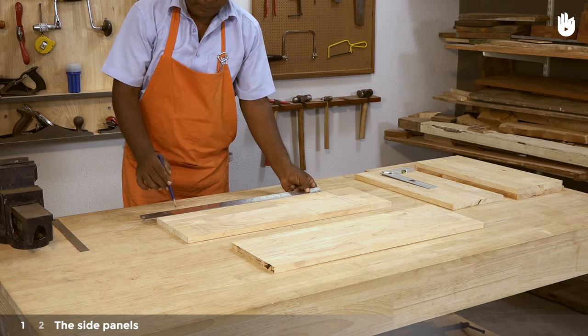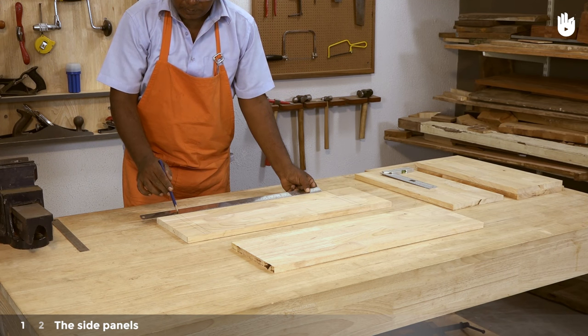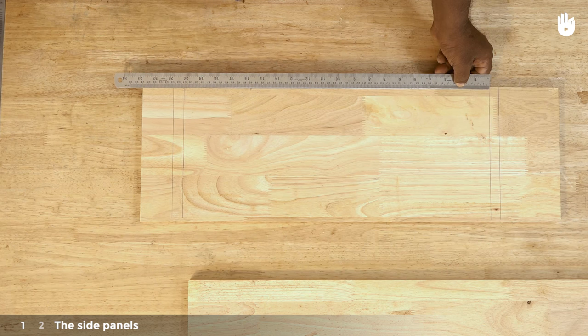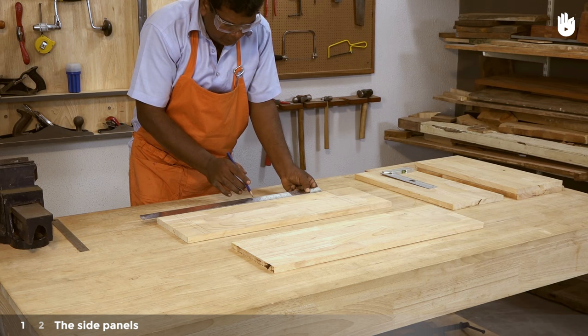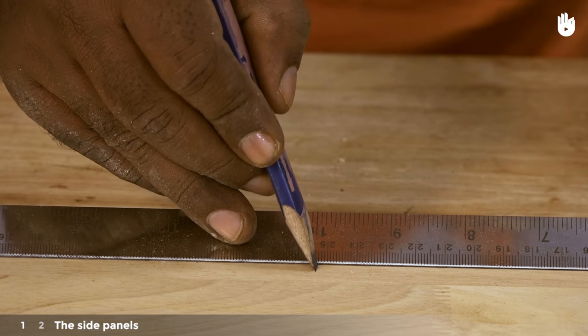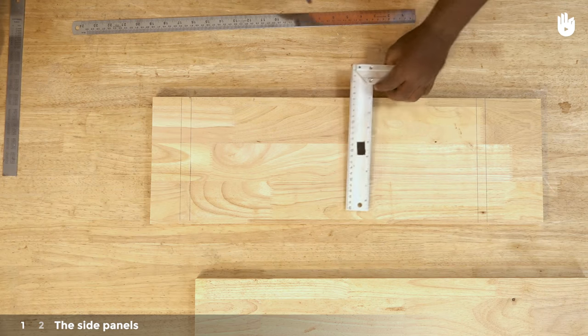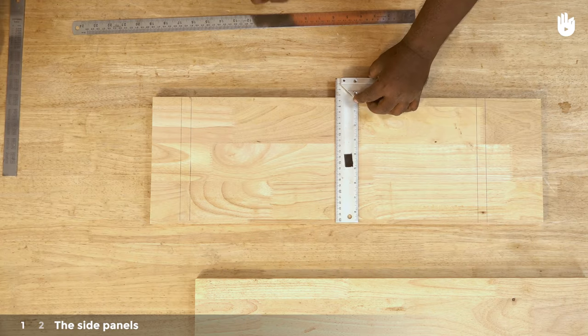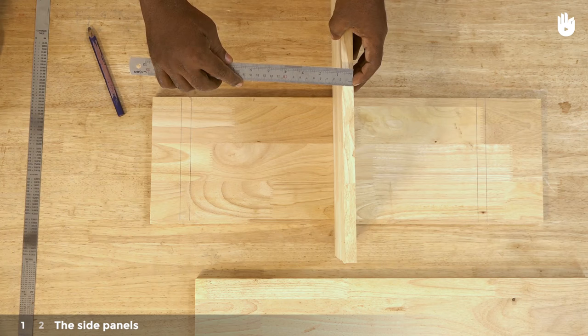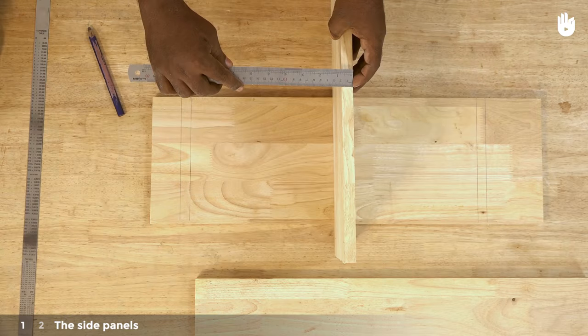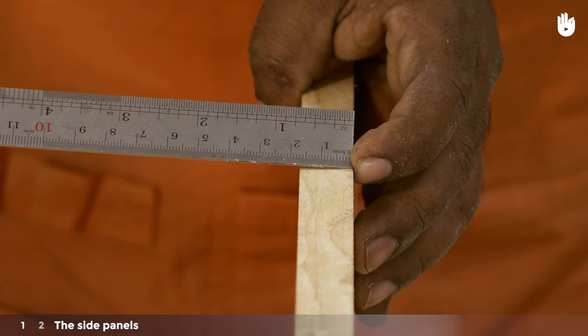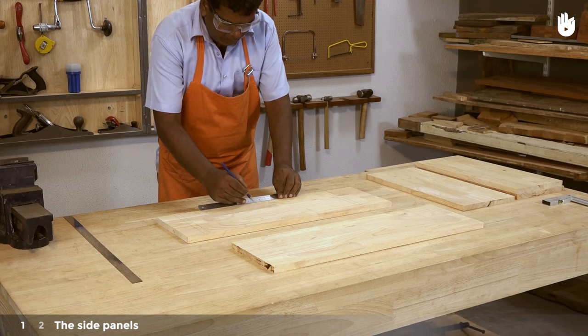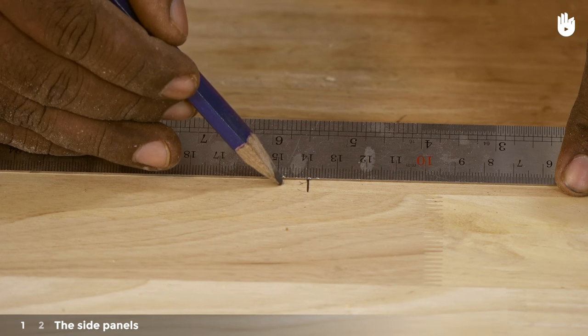Measure the distances between the two inner lines. Here it measures a length of 51 cm. Mark the center point at 25.5 cm. Measure the thickness of the shelf. Here it measures 1.8 cm. Draw a line 9 mm to the right and left of the center point.